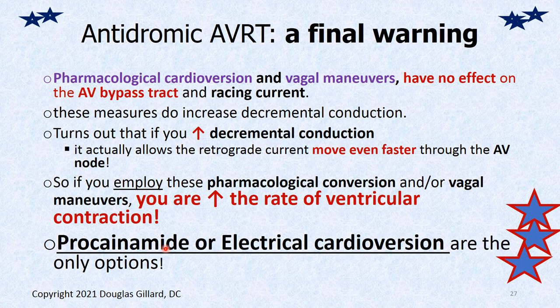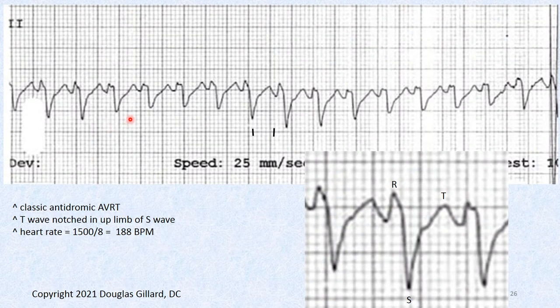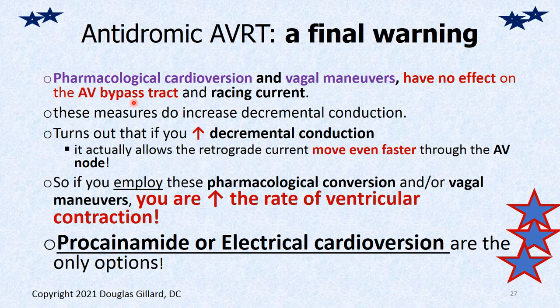A final warning about antidromic AVRT treatment: you cannot use the same treatment as orthodromic AVRT. If you try vagal maneuvers or give adenosine or any drug that tries to slow down the AV node — since the current is running backwards through it — it will make the current faster and could push the patient into ventricular tachycardia. You have to recognize this and know not to give adenosine. Don't do any vagal maneuvers. Instead, use procainamide or go straight to electrocardioversion.